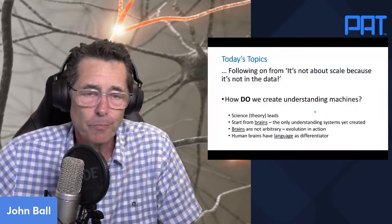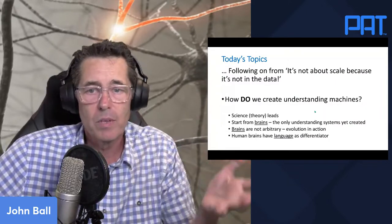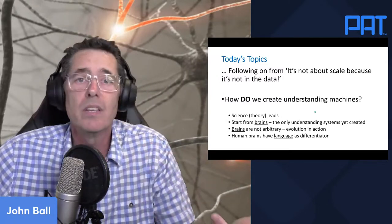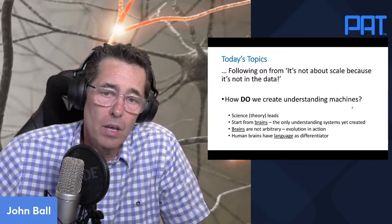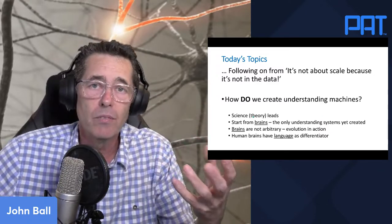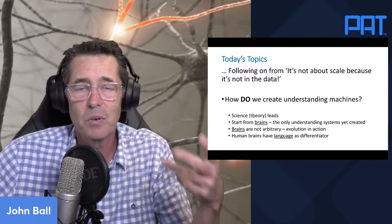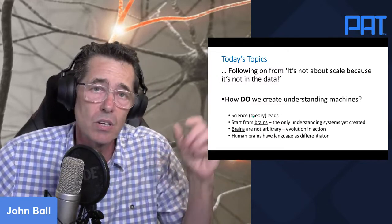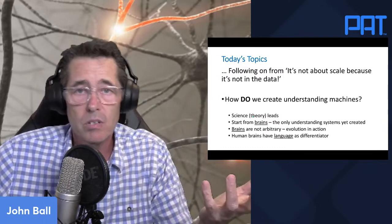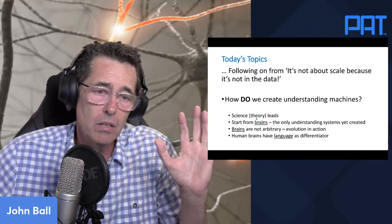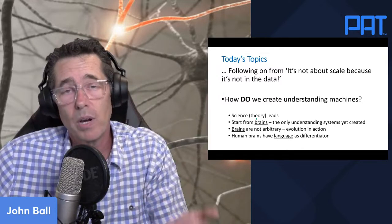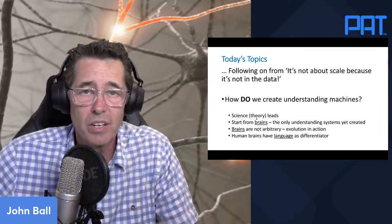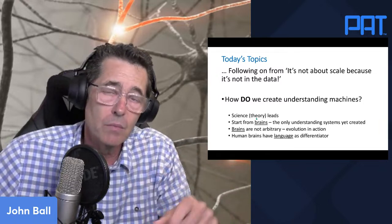What does an understanding system look like? Following on from 'it's not about scale because it's not in the data,' what we're going to look at today is what is in the data — what are we sure is in the data? In a brain we've got a data feed of vision, hearing, touch, and motion — it's all part of our experience. We know there's a lot in there that we should be able to use for things like language understanding.